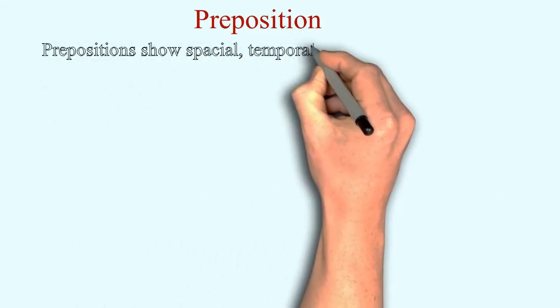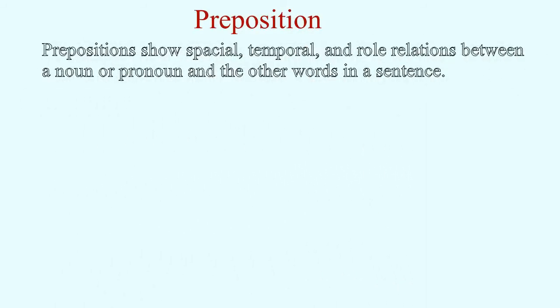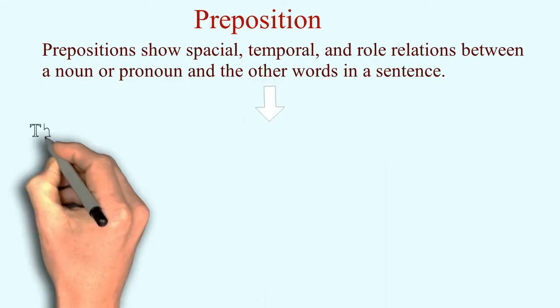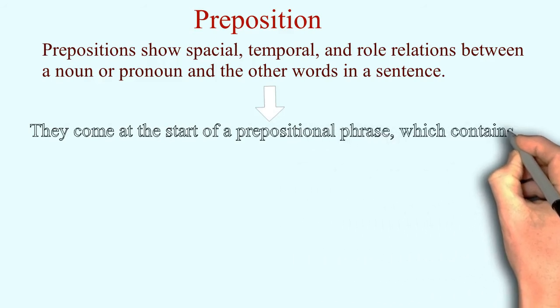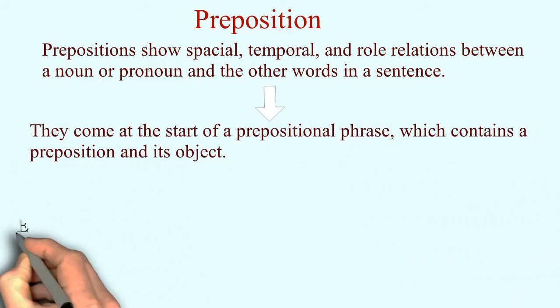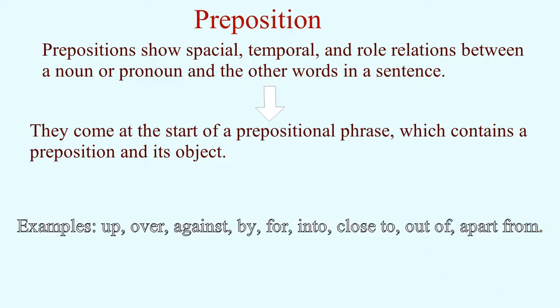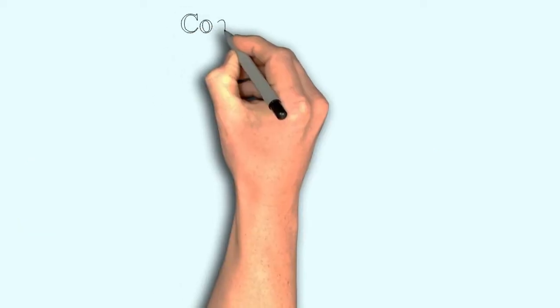Prepositions show the particular place or position of a noun, how and when a noun is to be used. They also show the relationship of one noun with other nouns and are used for nouns and pronouns. Examples include: up, over, against — these are all prepositions.